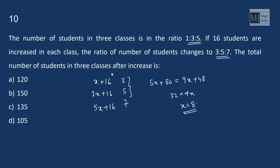The total number of students in 3 classes after increase is 9x, that is 9 into 8 is 72 and 16 into 3 is 48. So it is 120.